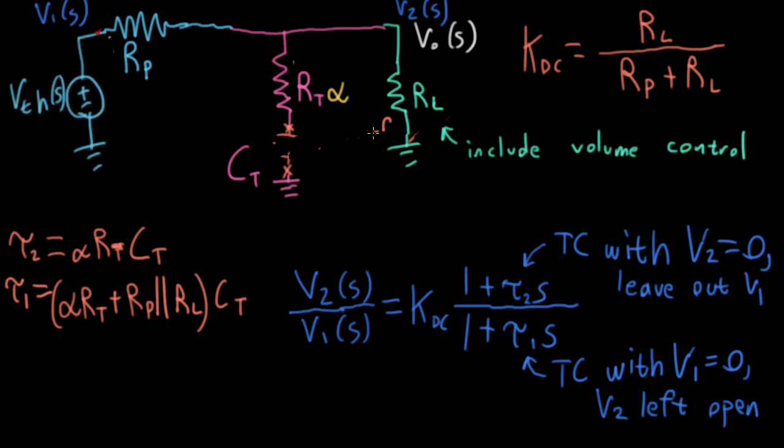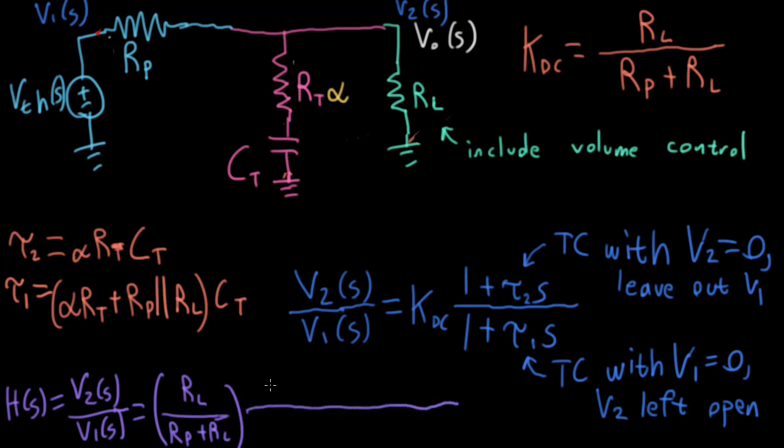All right, so that was nice. Let's put our little capacitor back in here. Okay, so now we can write our full transfer function. Let me call it H of s. So this is V2(s) over V1(s). And I'm writing it over here because I don't really have space over here without erasing a bunch of stuff. So KDC, this is going to be RL over RP plus RL. And then in the numerator, I'll have 1 plus alpha RT CT times s. And then in the denominator, I'll have 1 plus alpha RT plus RP in parallel with RL times CT times s.